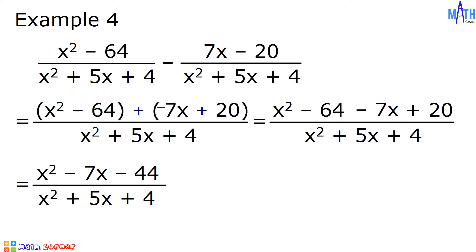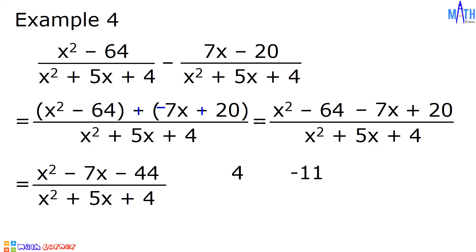Let us simplify the answer by factoring the numerator and the denominator. Both are quadratic trinomials where a is equal to 1. For the numerator, let us find factors of c, which is negative 44, that when added equal b, which is negative 7. The factors we need are 4 and negative 11, since 4 times negative 11 is negative 44, and 4 plus negative 11 is negative 7. So the factors are x plus 4 and x minus 11.